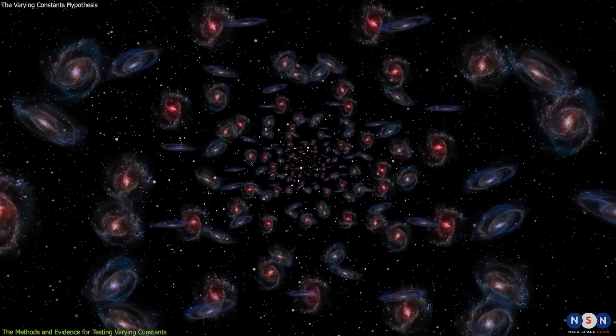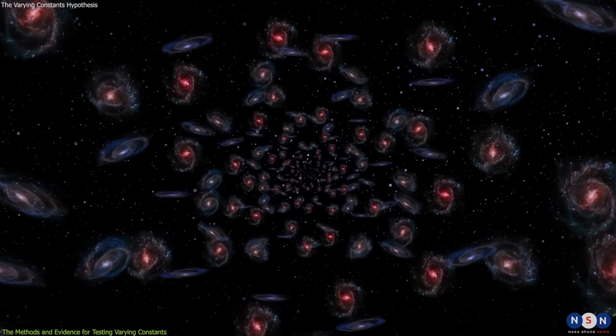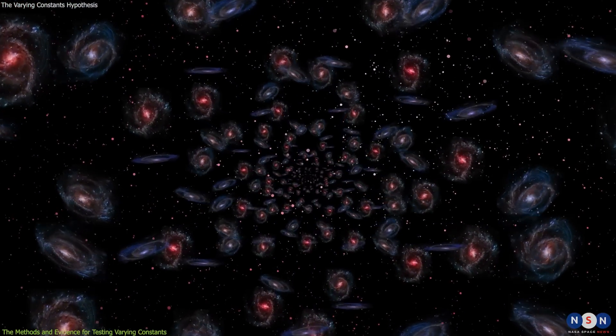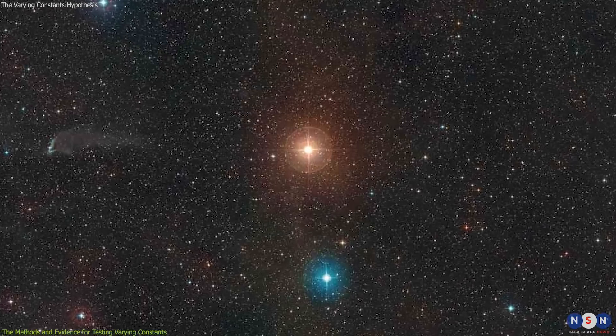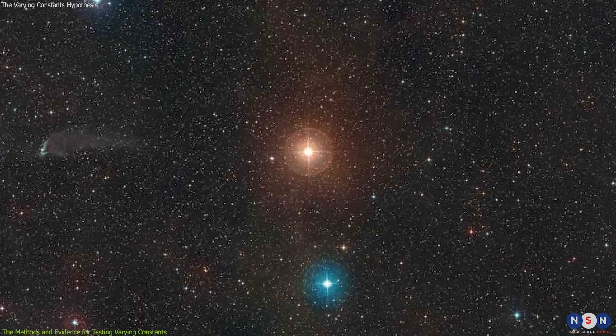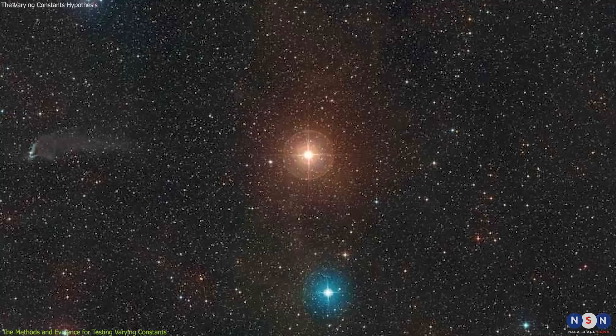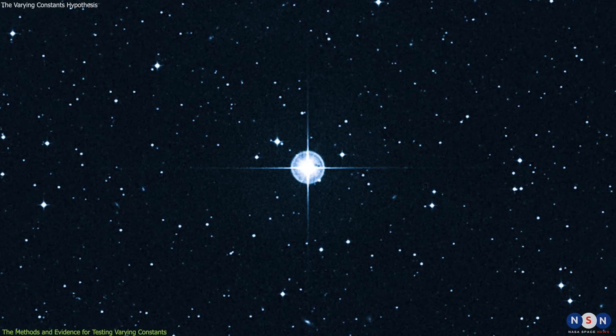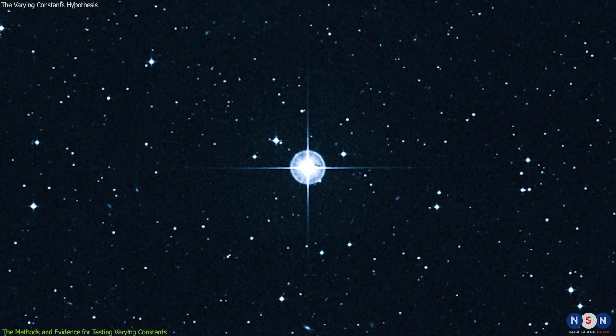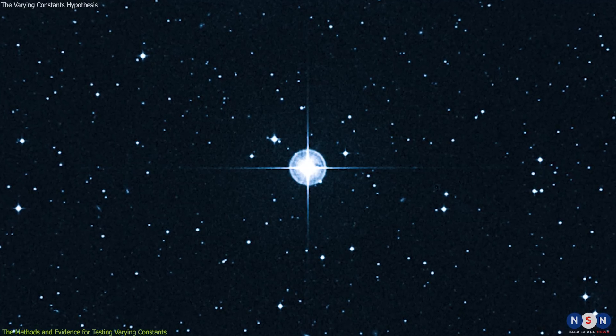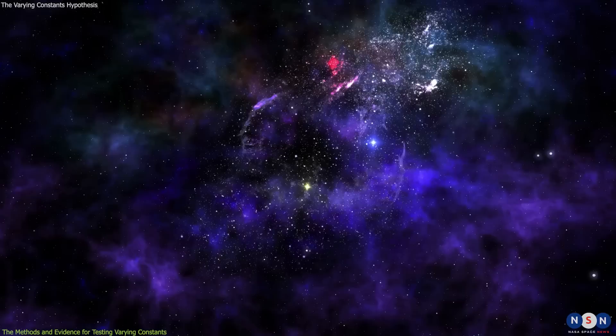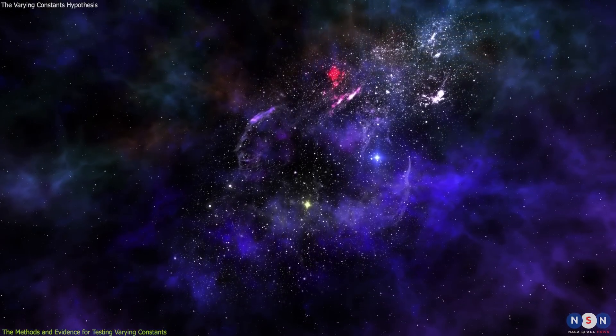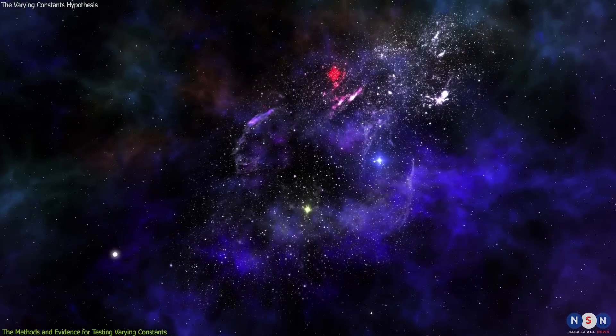One of the most intriguing and controversial cases that could suggest a variation in the speed of light over time is the case of objects that appear to be older than the universe itself. For example, some studies have claimed to find stars in our galaxy that are older than 13.7 billion years, which is the current estimate of the age of the universe. These stars are called Methuselah stars, and they are very low-mass and metal-poor stars that have survived for a very long time. However, if alpha or C were higher in the past, then these stars could have formed earlier and faster than we currently think, and thus appear older than they really are.